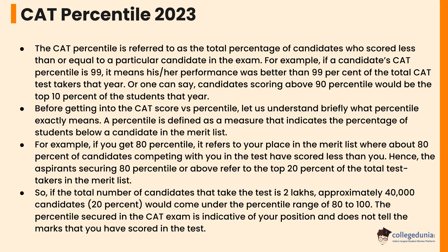Before getting into CAT score versus percentile, let us understand briefly what percentile exactly means. A percentile is defined as a measure that indicates the percentage of students below a candidate in the merit list. For example, if you get 80 percentile, it refers to your place in the merit list where about 80 percent of candidates competing with you in the test have scored less than you. Hence, aspirants securing 80 percentile or above refer to the top 20 percent of the total test takers. So if the total number of candidates that take the test is 2 lakhs, approximately 40,000 candidates — 20 percent — would come under the percentile range of 80 to 100.